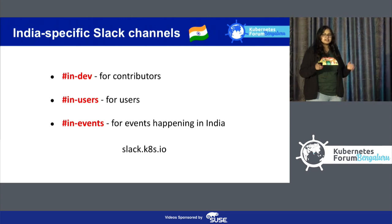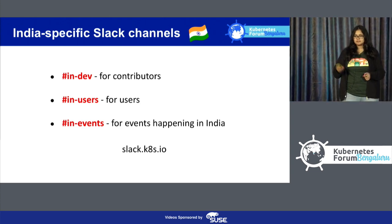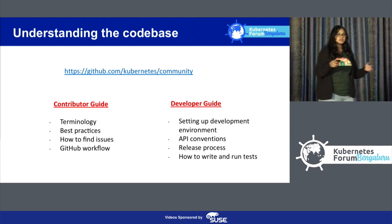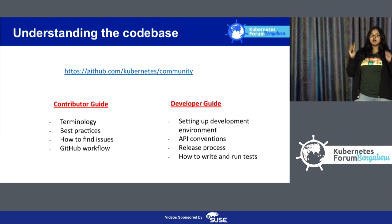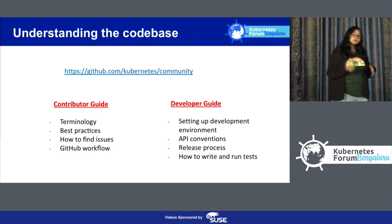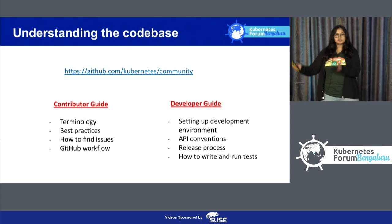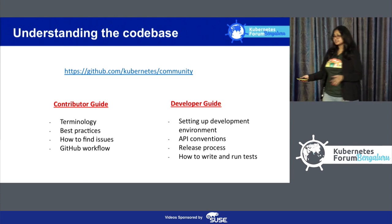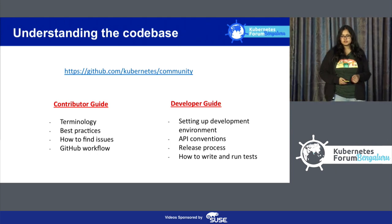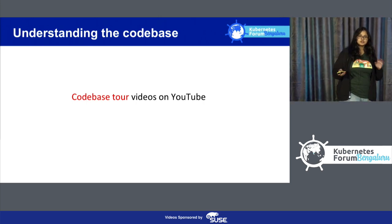If you're not already on the Kubernetes Slack, you can get an invite at slack.k8s.io. If you want to contribute code to the Kubernetes project, the first thing you need to do is understand the code base. You can do that by reading the contributor guide, which details conventions we follow in the community, and a developer guide which covers setting up your developer environment, API conventions, how you can change the API, release processes, and more. You can find that at github.com/kubernetes/community. We also have tons of codebase walkthrough videos on the Kubernetes YouTube channel.